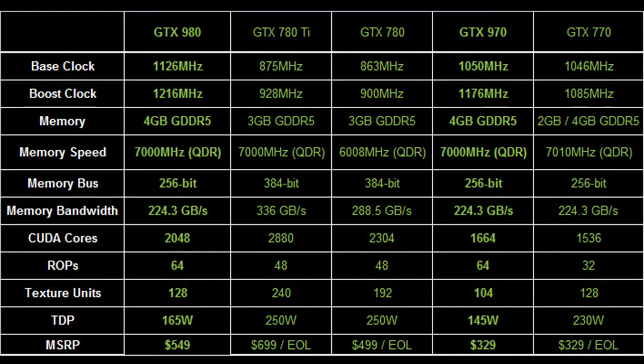The Asus card comes overclocked out of the box with more base clock and boost clock speed than the reference model. Now that we've got the specifications out of the way, let's see how the GTX 980 really performs. If you want to know more about the Asus Strix card, I'll leave a link in the description.